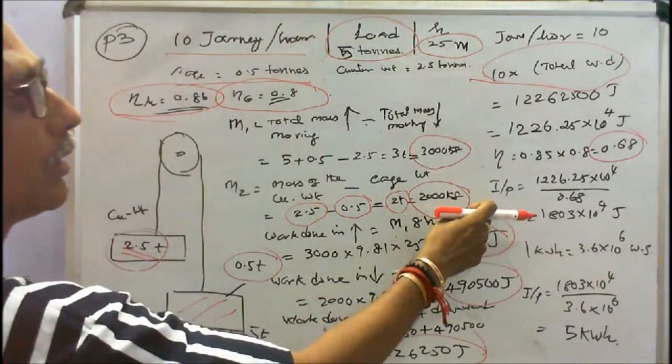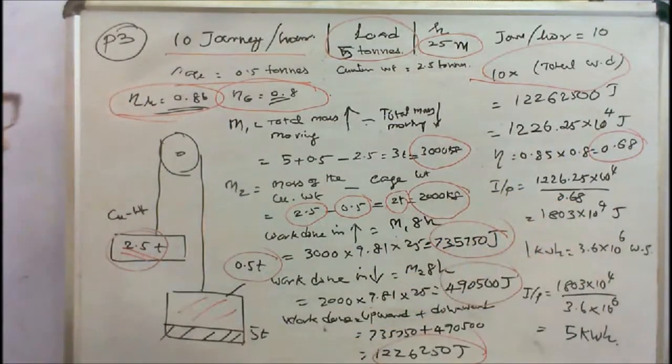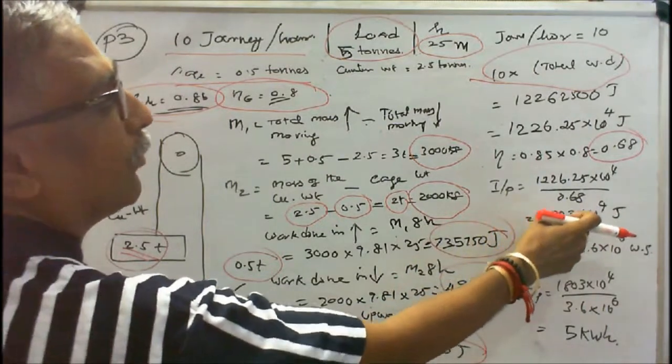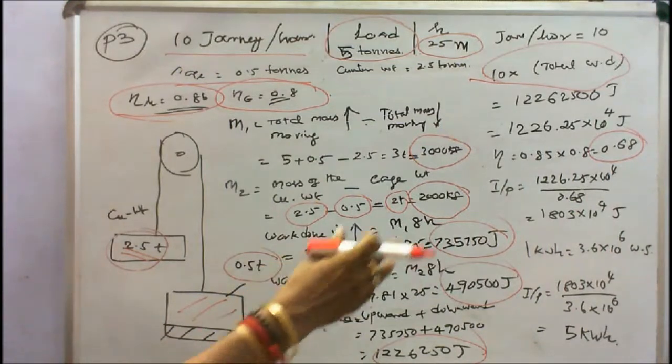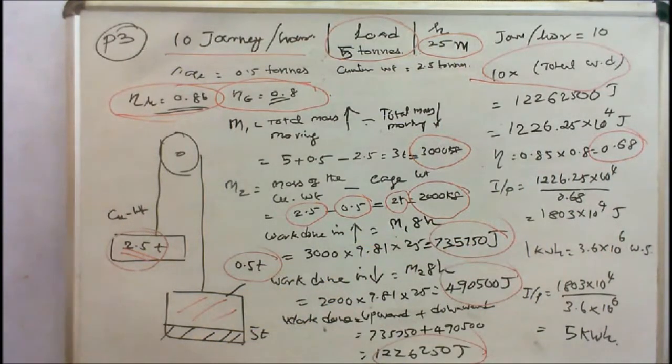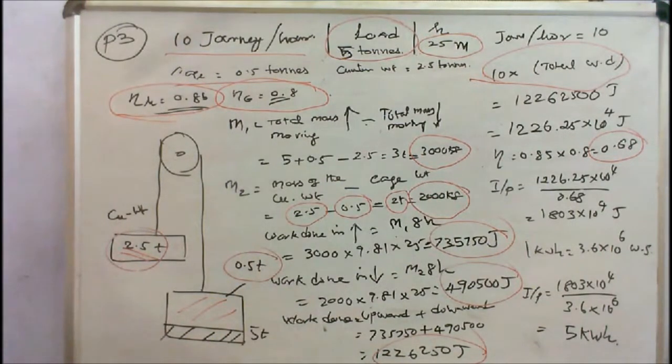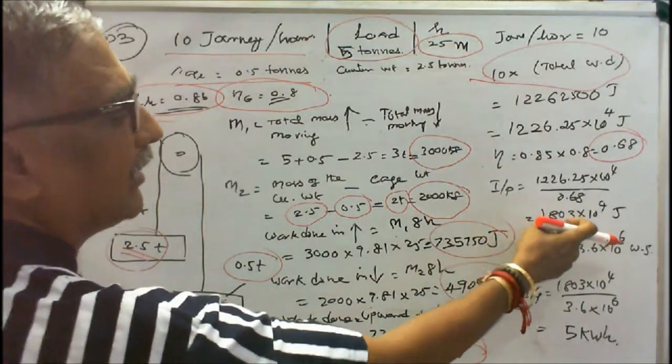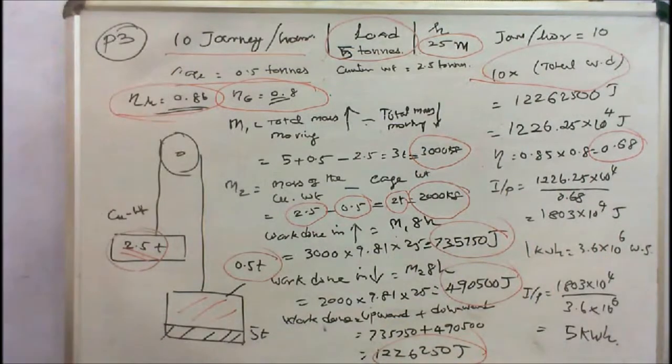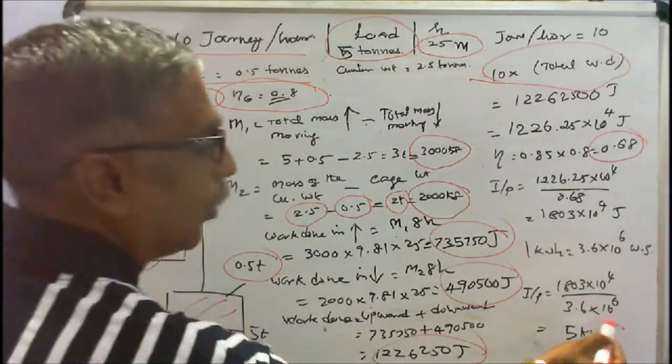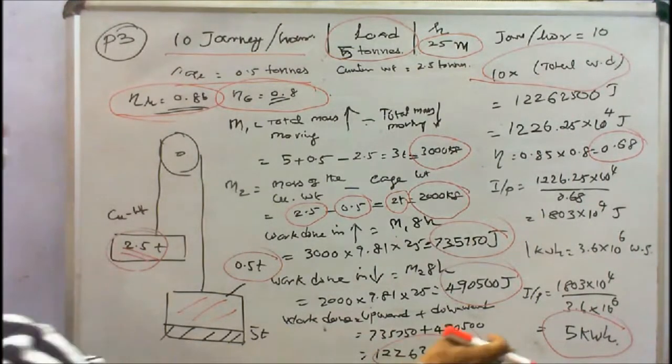Efficiency equals output by input, therefore input equals 1226.25 × 10⁴ divided by 0.68, we will get 1803 × 10⁴ joules. 1 kilowatt-hour equals 3.60 × 10⁶ watt-seconds (that is 1000 times 60 times 60). Therefore input equals 1803 × 10⁴ joules divided by 3.60 × 10⁶, we will get 5 kilowatt-hours. The energy consumption per hour is 5 kilowatt-hours.